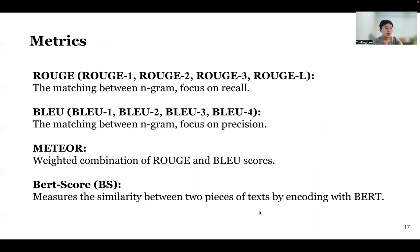For evaluation, we apply four metrics: ROUGE-1, ROUGE-2, and ROUGE-L, which are n-gram evaluation metrics calculating the overlap between machine-generated and reference contents. BLEU favors precision more than ROUGE, while ROUGE favors recall. METEOR is a weighted combination of ROUGE and BLEU scores. BERT score measures the similarity between pieces of text by encoding them with BERT embeddings, so our experiment considers not just lexical overlap but also semantic similarity between the machine generation and the reference.